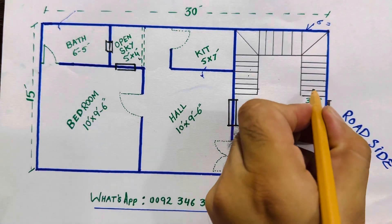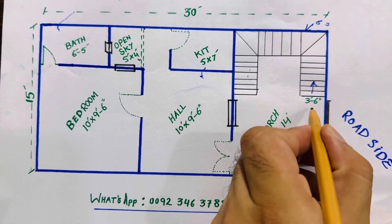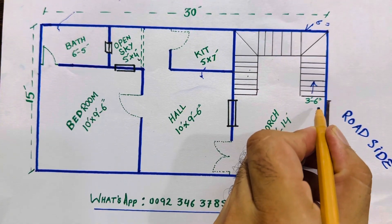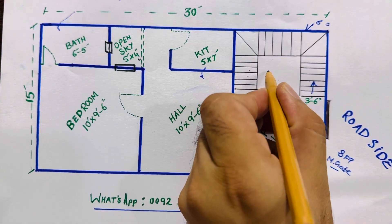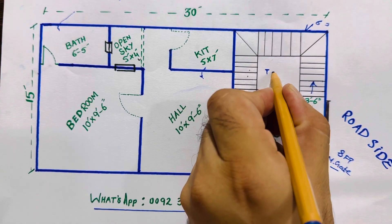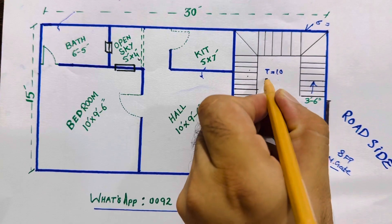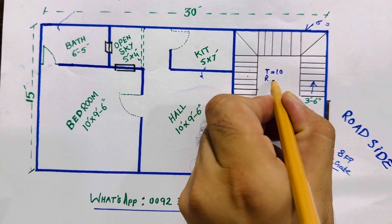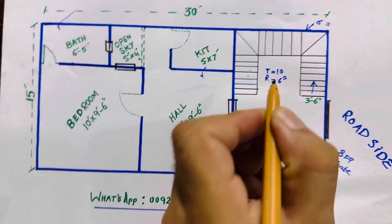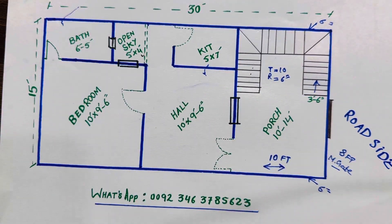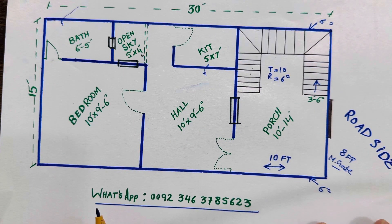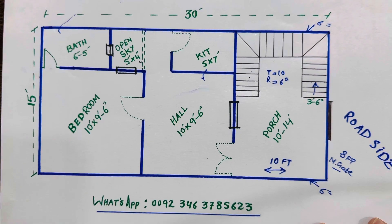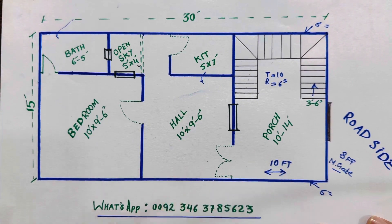You can see this is a staircase, which width is 3 feet 6 inches to the first floor. Each step tread is 10 inches and riser is 6 inches to the first floor. Under this staircase, you can also use it as a store, or you can use a general washroom or toilet.